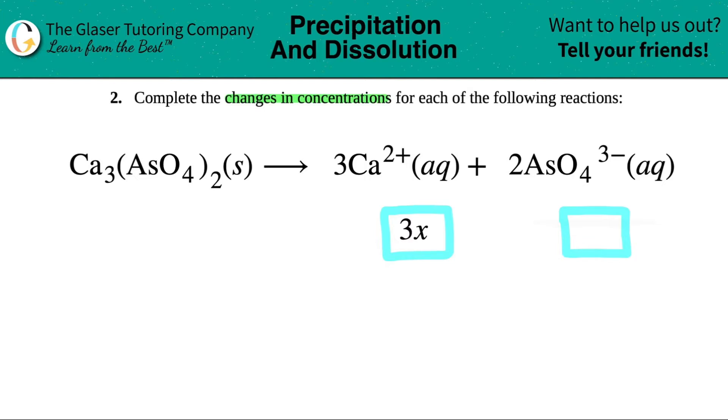More specifically, it's always talking about the coefficients, aka the big numbers in front of your ions in this case. So there's 3 calciums for every 2 AsO4s. So that's why they denoted the calcium as 3x because there was a 3 in front of the coefficient.